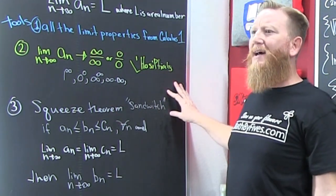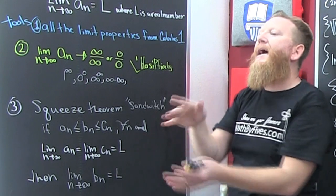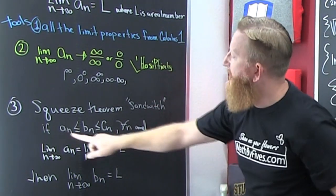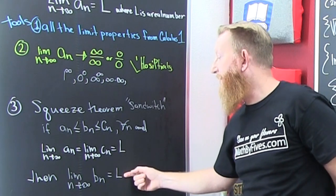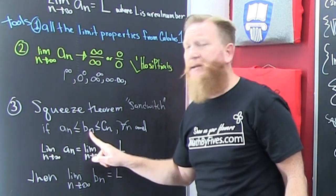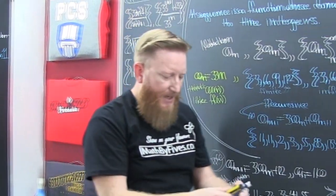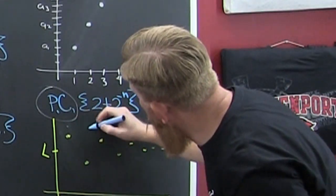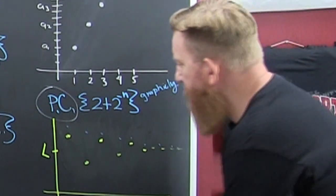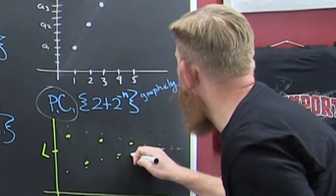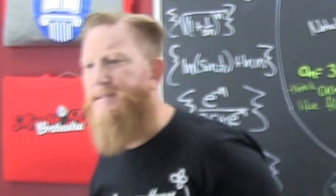The squeeze theorem — also called the sandwich theorem — says that if one sequence is always below the middle sequence and one sequence always dominates it, and both outer sequences go to L, then necessarily the limit of the middle one also goes to L. Visually: if these dots are all above the lower dots, and these dots all go to L, and the upper dots also go to L, then everything is squeezed to L.